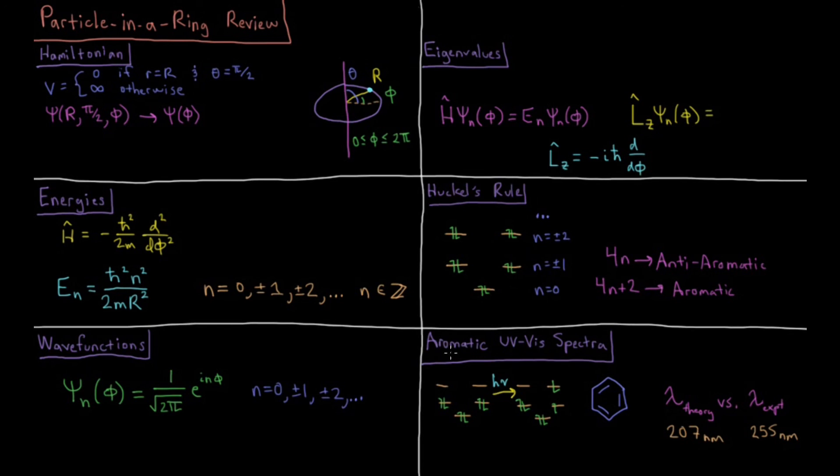We can also use this model system to look at the UV-vis spectra of aromatics such as benzene. We can start with our six electrons in the n equals zero and plus or minus one states. Then we can hit that with a beam of light, excite one of our electrons up to the n equals two state.